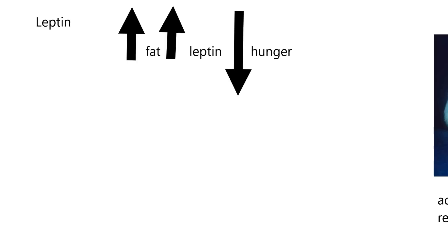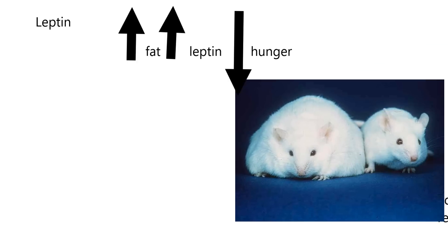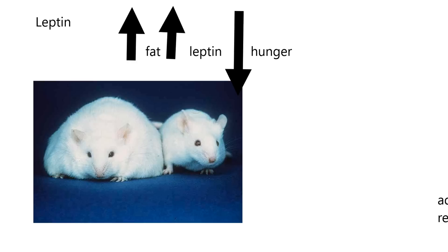If you interfere with leptin, as shown in this picture of two mice that are basically clones of each other - the mouse on the left has had its leptin inactivated, so it's not getting the signal to decrease hunger. The mouse on the right has been left alone, so its appetite is in check. This mouse's appetite is not in check because it's not getting the message from leptin.